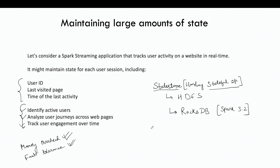The next challenge in stream processing is maintaining large amounts of state. For example, a Spark streaming application tracking user activities on a website in real time — just like the clickstream example — might maintain state for each user session: user ID, last visited page, and the time of the last activity. What we want to understand is the identification of active users and how user journeys look across web pages.